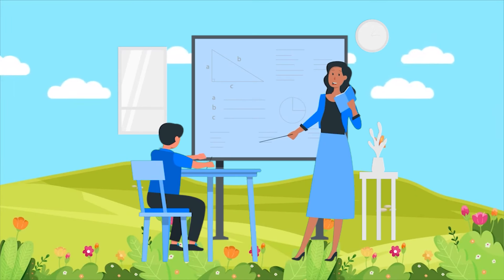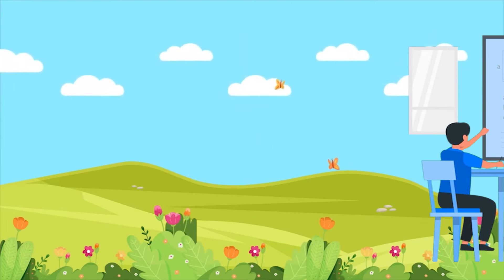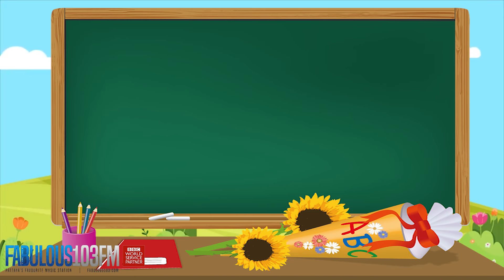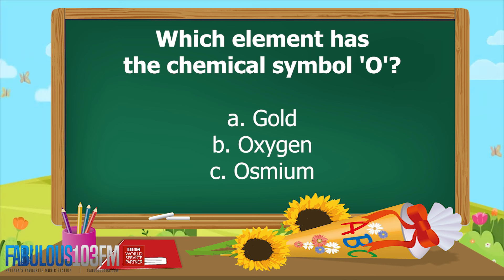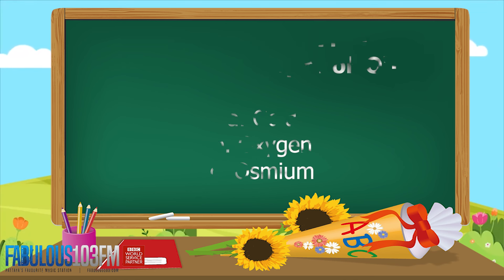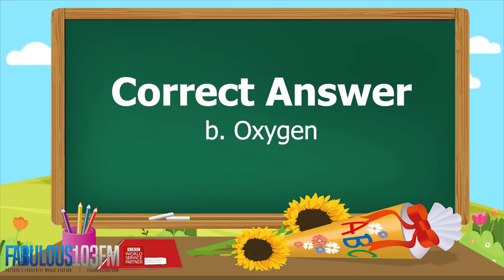The first question was: which element has the chemical symbol O? Is it A) gold, B) oxygen, or C) osmium? If you answered B) oxygen, then you're absolutely correct!